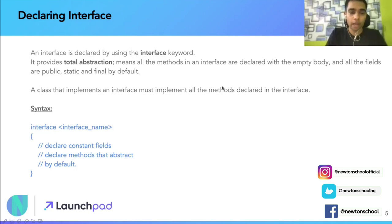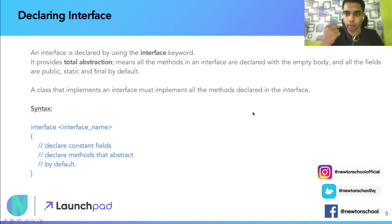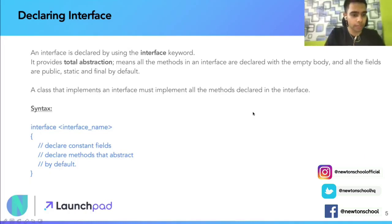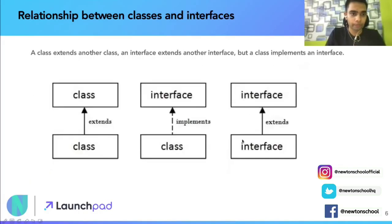Any class that implements an interface must implement all the methods declared in the interface — this is a crucial point. A class cannot implement only one or two methods and skip others. The syntax starts with the keyword 'interface' followed by the interface name, with constant fields and abstract methods defined inside.